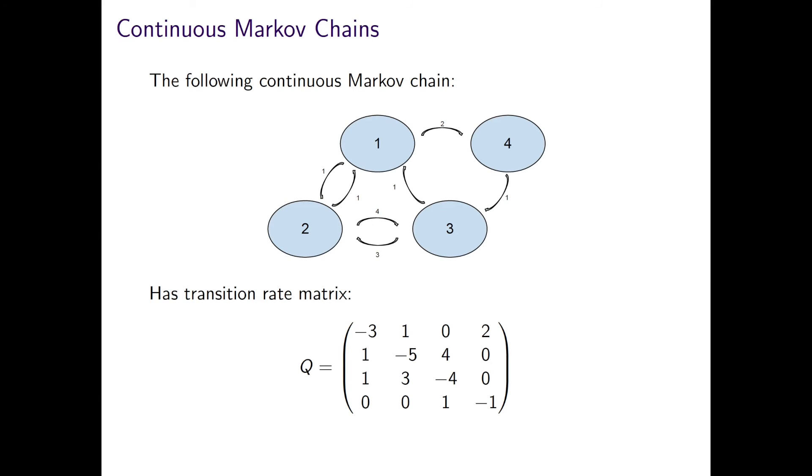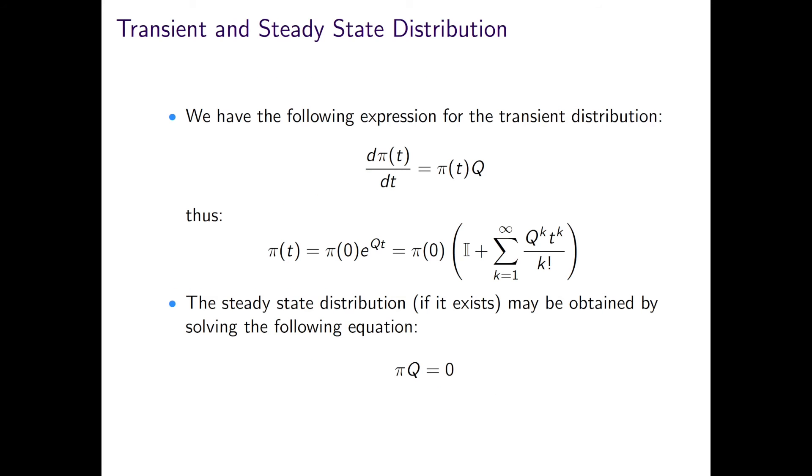Just briefly, we can also treat time in a continuous fashion, and this leads instead to a transition rate matrix denoted by Q, an example of which is shown here with a different four state model and flows between them. And without wishing to go into the specifics, one can derive expressions for the transient distribution, and thus obtain steady state probabilities, if they exist, by solving PIQ equals zero.